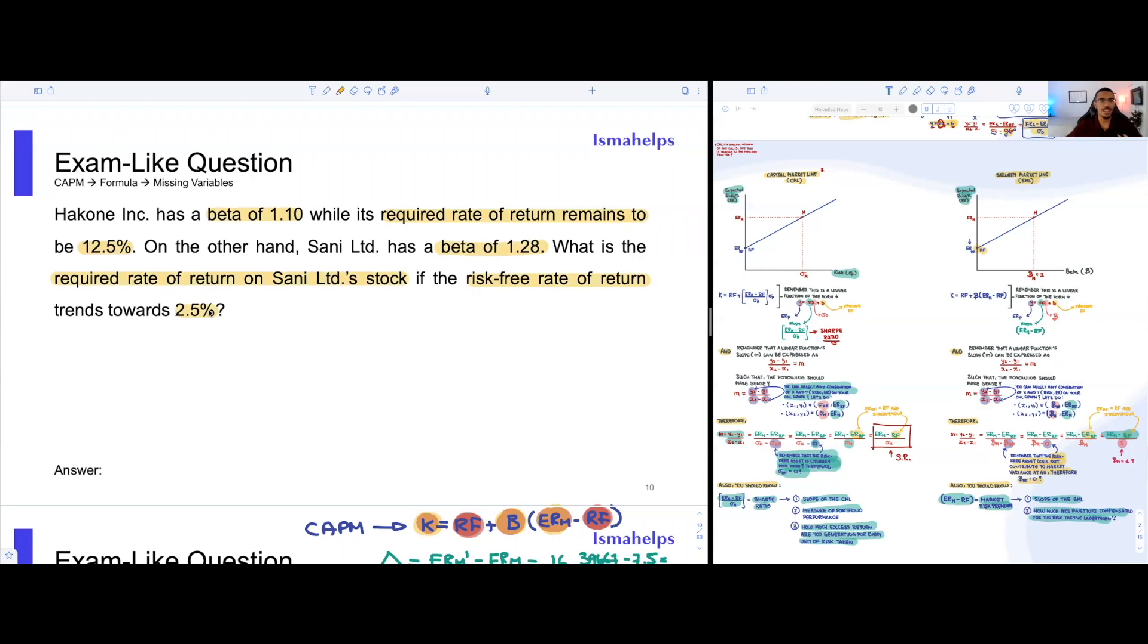We've identified everything within the formula, and we're going to do that one step further. We're going to actually attribute variables to them, just such that we know exactly what we're looking at. The beta of Hakone is equal to 1.10, we'll call it BH. And we know that the required rate of return on Hakone's stock, KH, is equal to 12.5%.